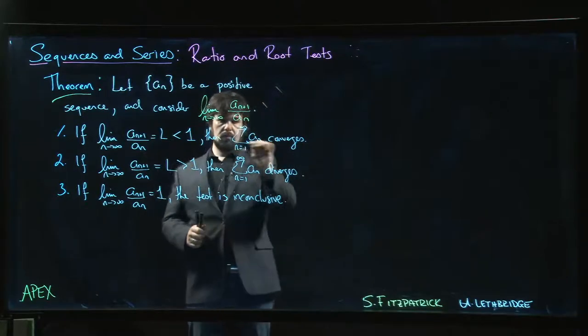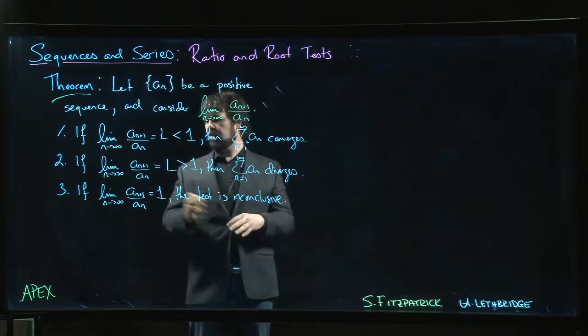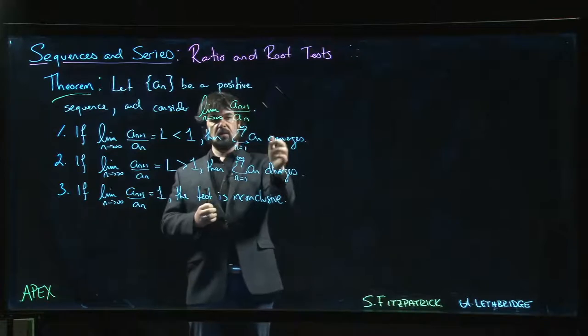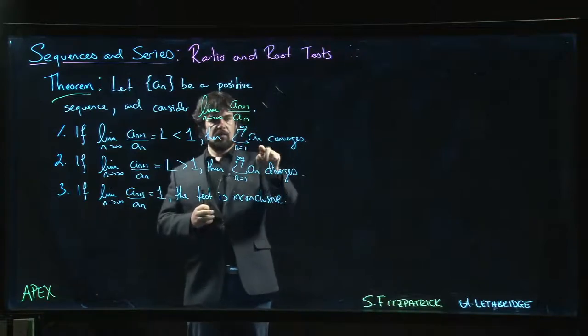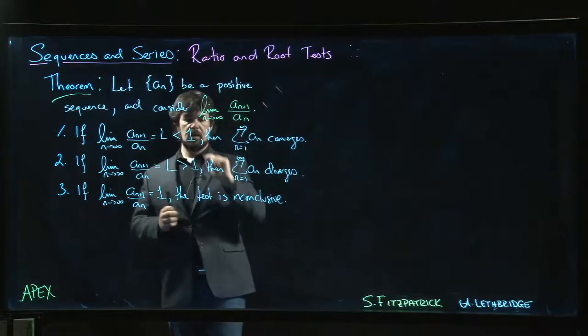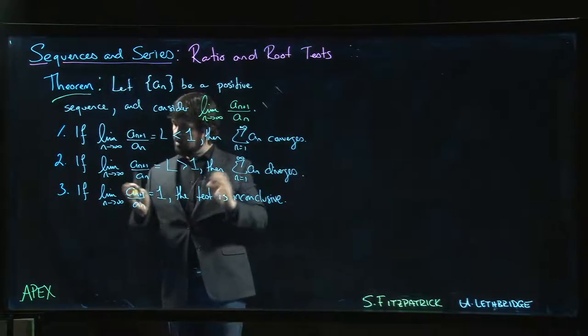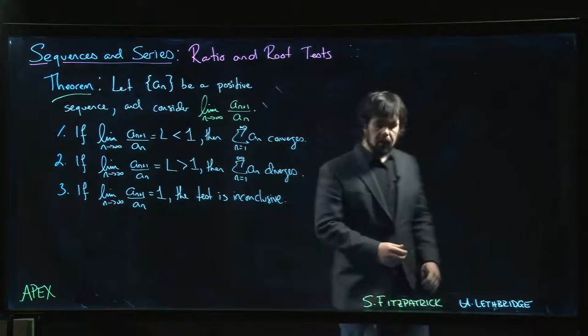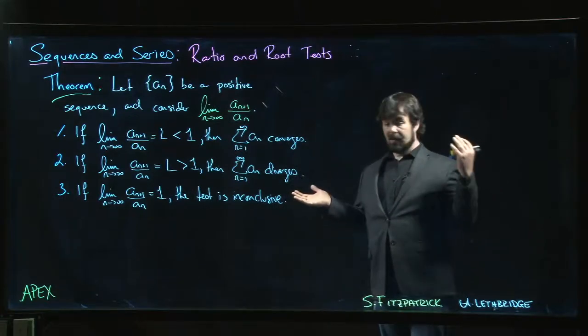If that limit comes out to a value which is less than one, you know your series converges. If it's bigger than one, the series diverges. And if you actually get one on the nose, then the ratio test fails—the test tells you nothing if that limit happens to equal one.